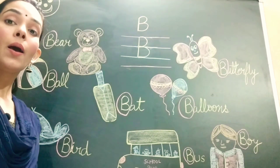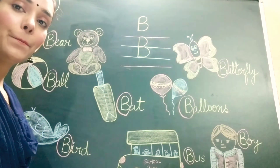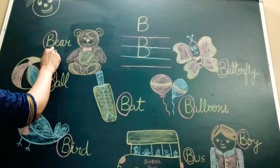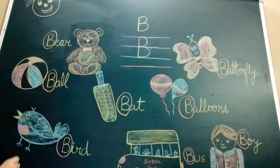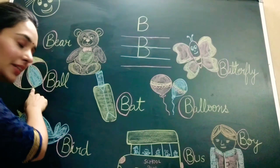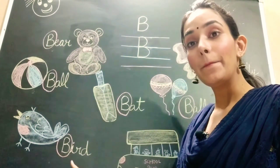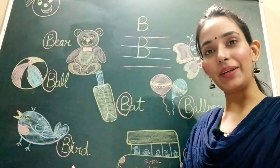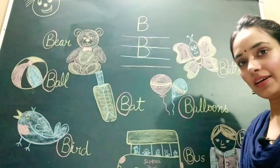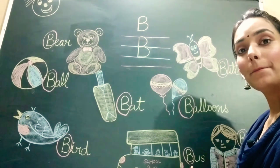And B says B. B says B. B — B — bear. B bear. B ball. B ball. B bird. B bird. B bus. B bus.